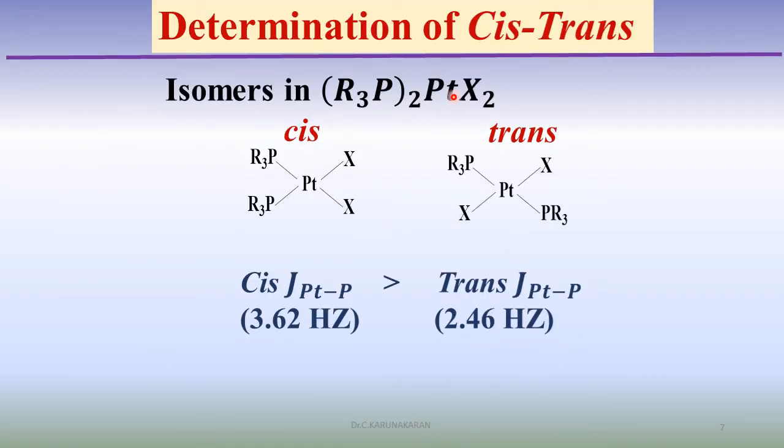NMR is also used to investigate cis-trans isomers. For example, in platinum complexes, platinum I equal to 1/2, phosphorus I equal to 1/2. The coupling constant for cis is 3,562. From the coupling constant values, the cis-trans isomers can be differentiated.